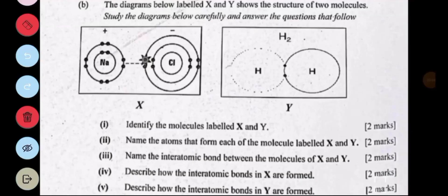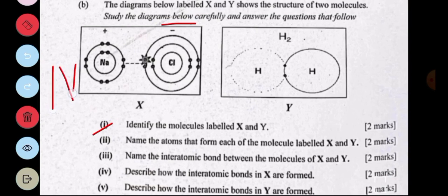The next question: the diagram below labeled X and Y shows the structure of two molecules. Study the diagrams carefully and answer the questions that follow. Part i asks us to identify the molecules labeled X and Y. The molecule in X is sodium chloride, NaCl, and the molecule in Y is hydrogen gas, H₂.